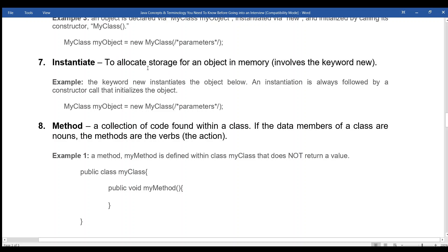Instantiate: To allocate storage for an object in memory, involves the keyword new. The keyword new instantiates the object below. An instantiation is always followed by a constructor call that initializes the object. MyClass myObject equals new MyClass with parameters.